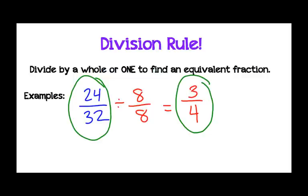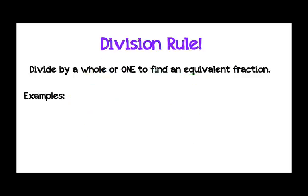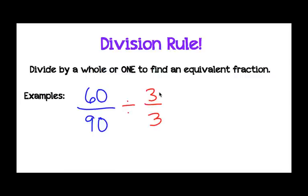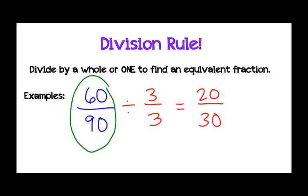Let's try another one. Let's say that we had the fraction 60/90 and we wanted to find an equivalent fraction. I know that 3 goes into 60 and I know that 3 goes into 90. So I'm going to divide by 3 over 3. Remember, whatever I do to the numerator, I have to do to the denominator. 60 divided by 3 is 20, and 90 divided by 3 is 30. So I have now found an equivalent fraction: 60/90 is equivalent to 20/30.